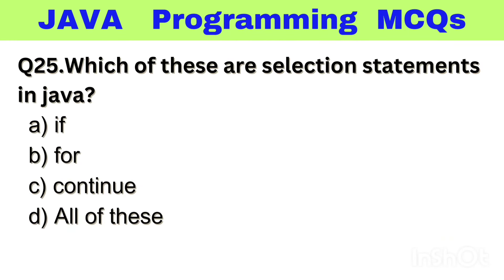Question number 25. Which of these are selection statements in Java? Option A: If, B: For, C: Continue, D: All of these. The right answer is option A, If.